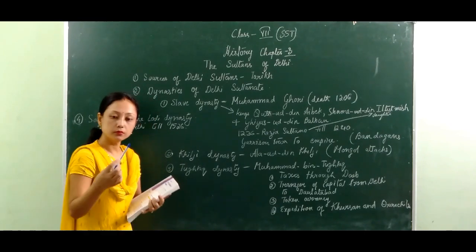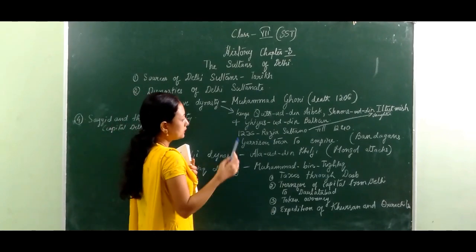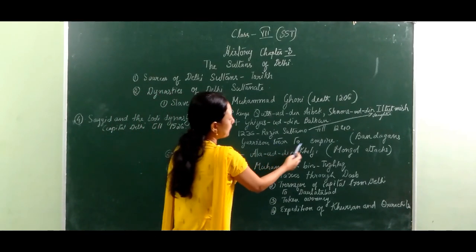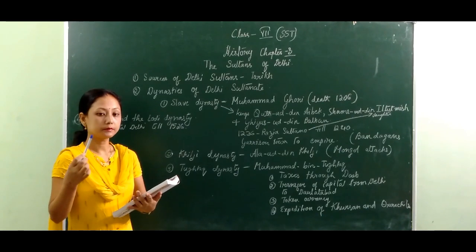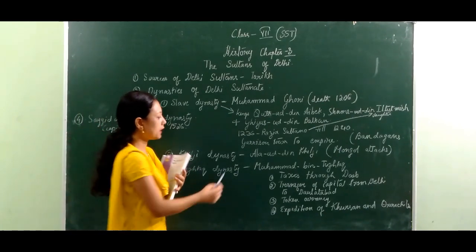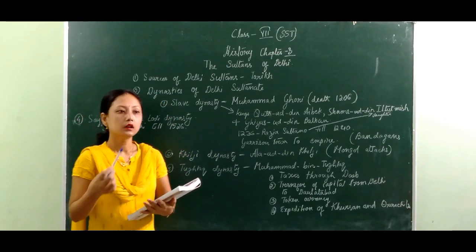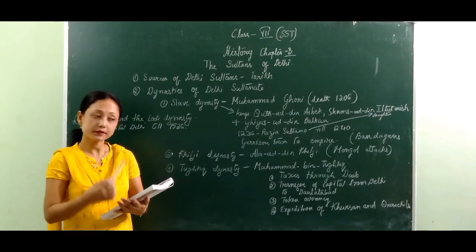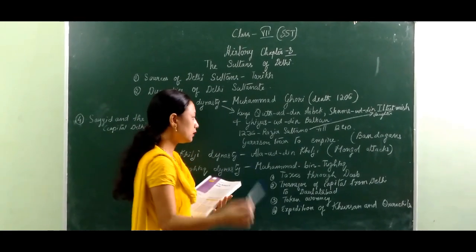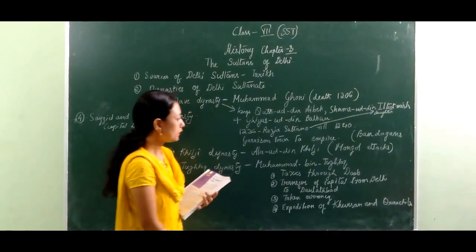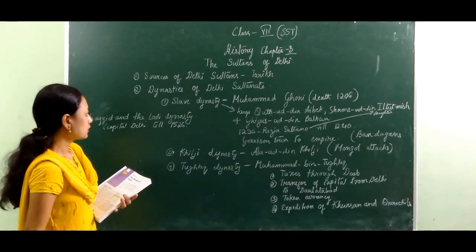During the Slave Dynasty, the kings tried to collect taxes from the empire — known as garrison. If farmers produced 100 percent, they had to give 50 percent to the king as tax. If they were unable to pay, they had to sell their houses and properties to give the proper taxes to the king. This is the Slave Dynasty.